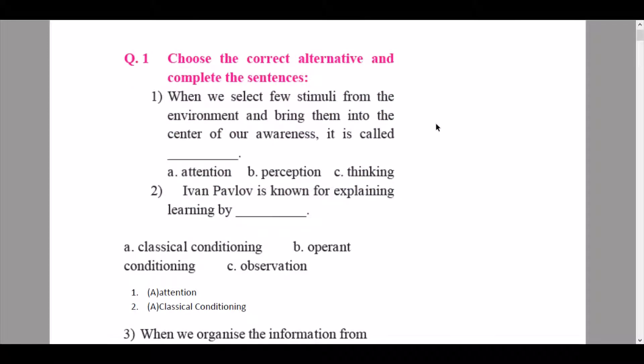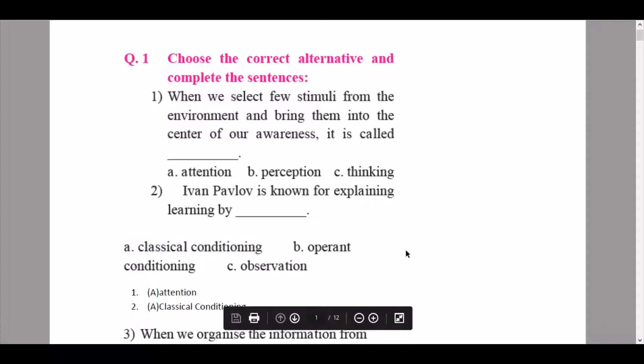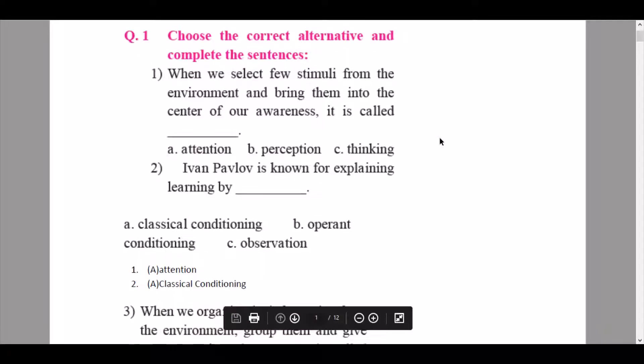So the statement would be when we select few stimuli from the environment and bring them into the center of our awareness it is called attention. The next question says Ivan Pavlov is known for explaining learning by dash. So here the answer is classical conditioning as we had learned in part two of cognitive processes.